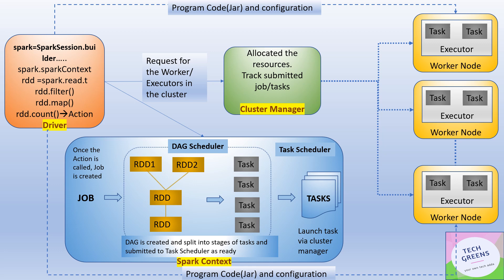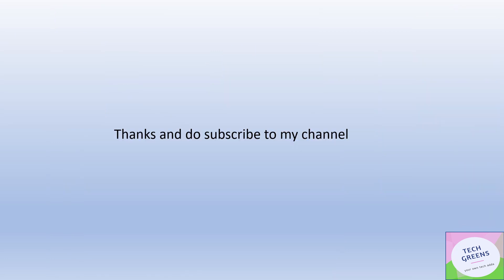One important point: once you do a spark-submit and pass in your program JAR and configurations like number of executors, cores, etc., these are all broadcasted to all nodes in the cluster to facilitate the execution of parallel tasks. That's it, guys — the internal detailed execution flow of a Spark job. Thanks for watching, have a great day!